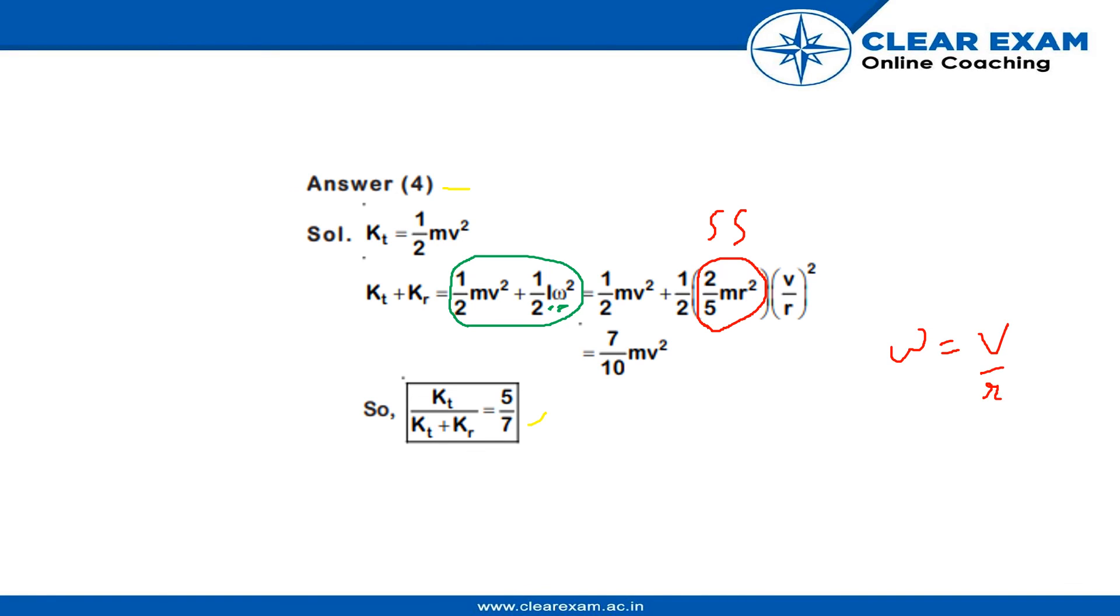So, putting these both values we get the translational as half MV squared and KT plus KR is 7 by 10 MV squared.